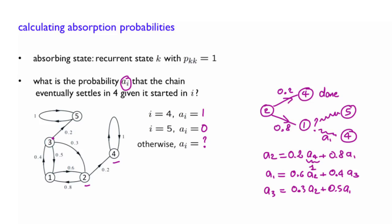And finally, with a probability 0.2, you get trapped in 5. You can write it if you want, 0.2, and you get trapped in 5. But we know that a of 5 is 0, so this term will disappear.